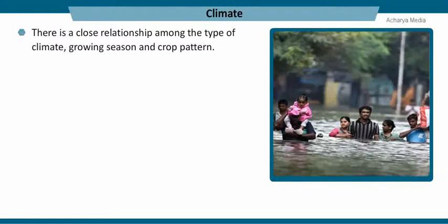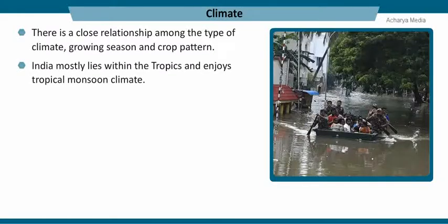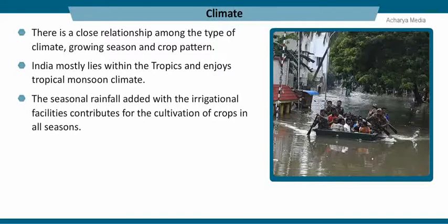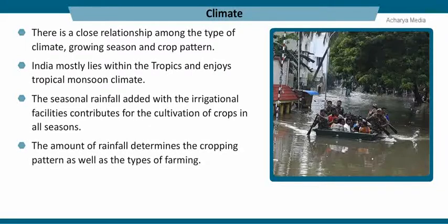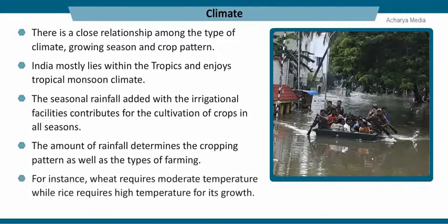There is a close relationship among the type of climate, growing season, and crop pattern. India mostly lies within the tropics and enjoys a tropical monsoon climate. The abundance of solar energy favors the growth of crops all around the year. The seasonal rainfall, added with irrigational facilities, contributes to the cultivation of crops in all seasons. The amount of rainfall determines the cropping pattern as well as the types of farming. For example, wheat requires moderate temperature while rice requires high temperature for its growth.